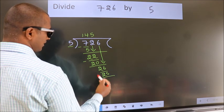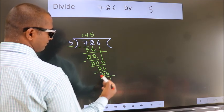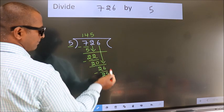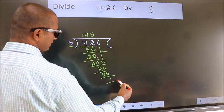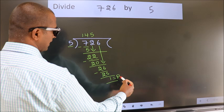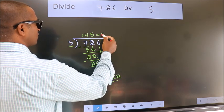Now, we subtract. We get 1. No more numbers to bring it down. So, we stop here. This is our remainder. This is our quotient.